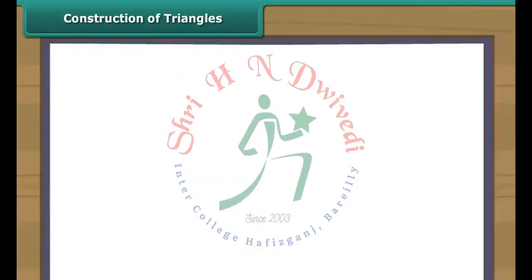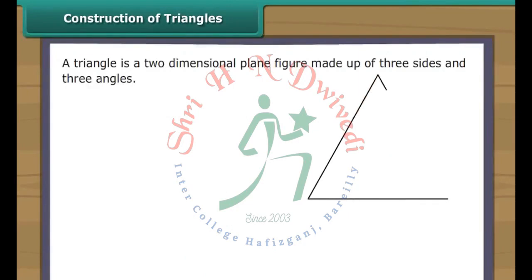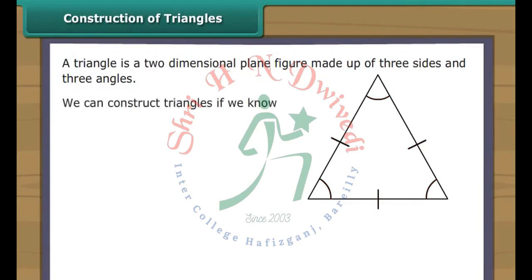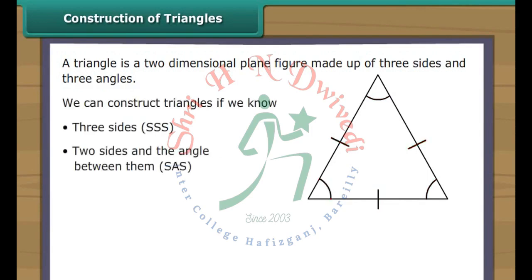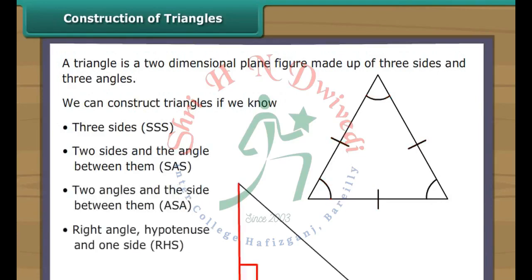Construction of Triangles. A triangle is a two-dimensional plane figure made up of three sides and three angles. We can construct triangles if we know: three sides (SSS); two sides and the angle between them (SAS); two angles and the side between them (ASA); or right angle, hypotenuse and one side (RHS). Let us learn to construct all four types of triangles.